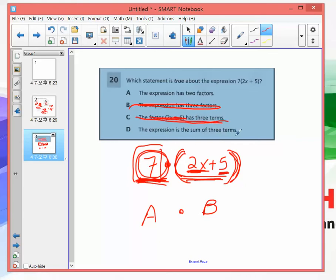The expression is the sum of three terms. No it's not. We're not adding three things here, we're multiplying two things. We're not adding 7 plus 2x plus 5. So right there is your incorrect answer.